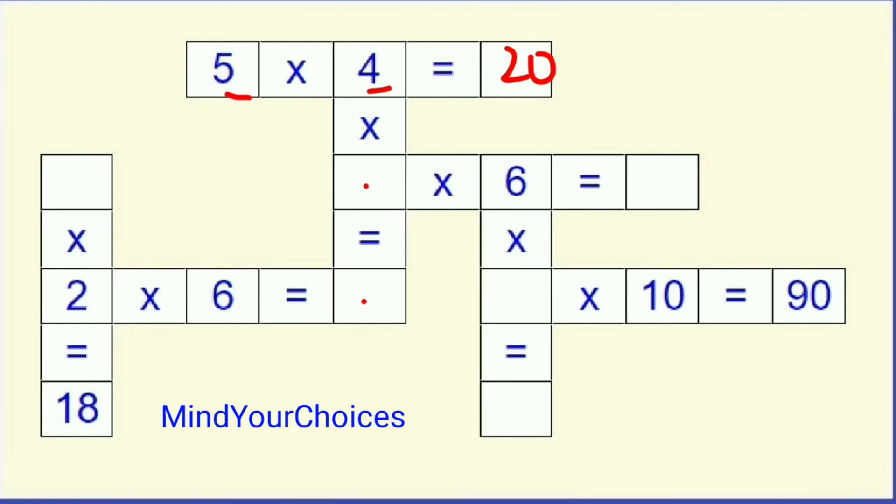Next one, you can see here the first row, which number into 2, which number we have to write, which is multiplied by 2 and we get here 18. So, definitely 9. So, we have to write there 9, 9 into 2 is 18.